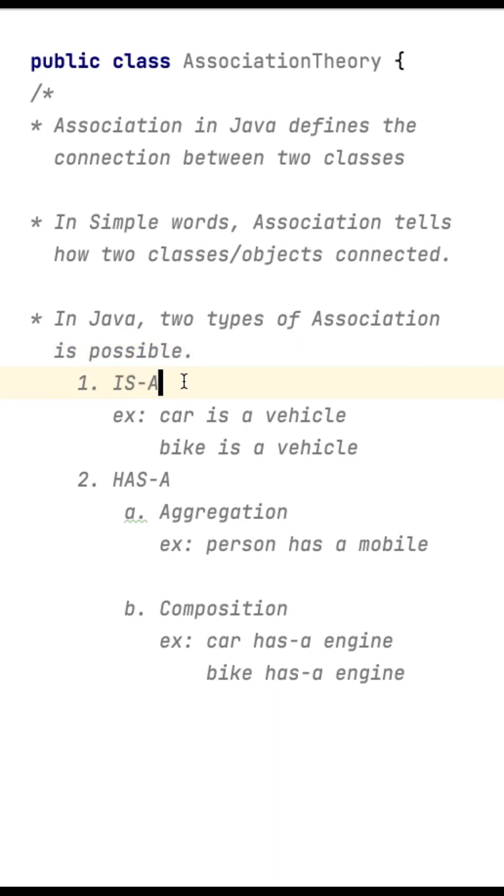One is IS-A relationship. That means there is a car object and vehicle object. So what relation is it? Car is a vehicle. Similarly, bike is a vehicle. So this is the relationship between car and vehicle, bike and vehicle.